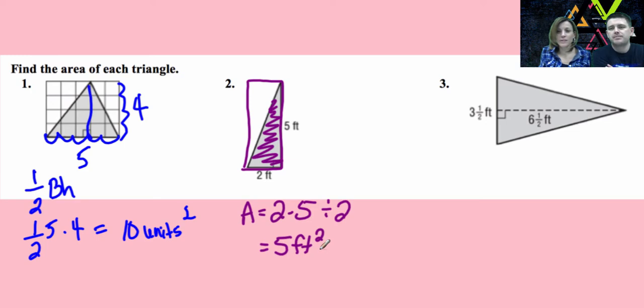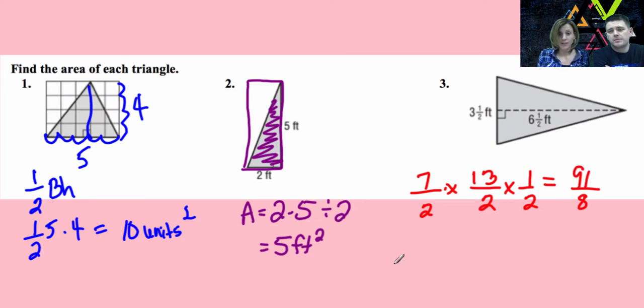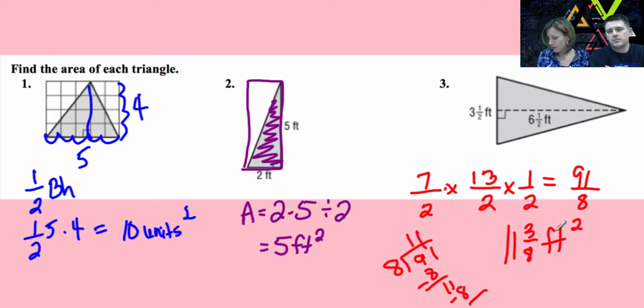All right. So you have a choice in the third problem, decimals or fractions. I'm going fractions. Three-and-a-half is going to turn into seven over two. Six-and-a-half is going to be 13 over two. And then our formula does include that one-half. Top times top, and bottom times bottom, two, four, eight. Denominator, 13 times seven is going to get us 91. Now I've got to change it back. Eight into 91 is 11. So I got 11 with three eights feet squared.